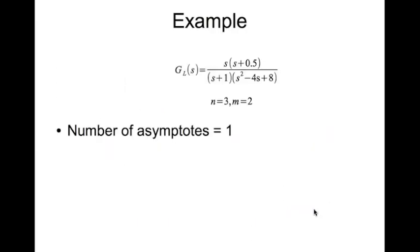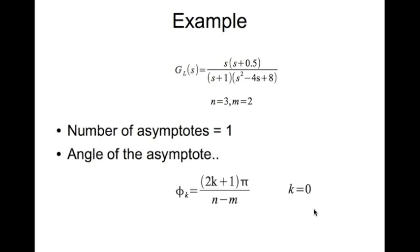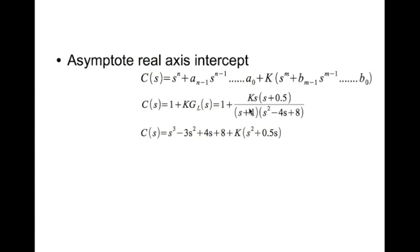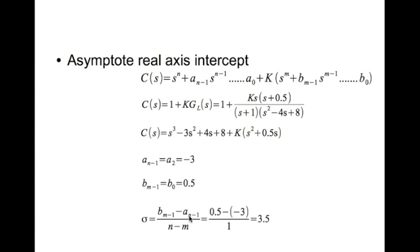In this example, n = 3 and m = 2, so the number of asymptotes is 1. The angle is φ_0 = (2·0 + 1)π / (3 − 2) = π. For the intercept, we write the characteristic equation in standard form. We find a_{n−1} = a_2 = −3 and b_{m−1} = b_0 = 0.5, giving σ = (0.5 − (−3)) / 1 = 3.5.